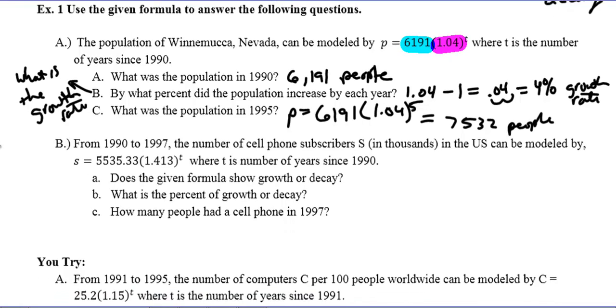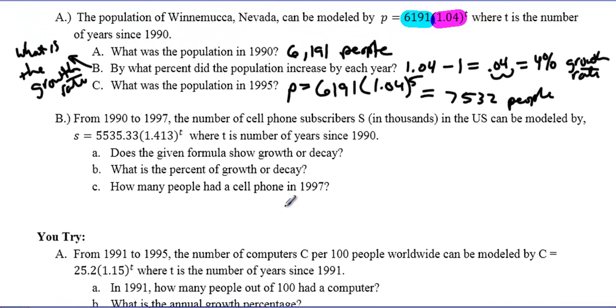Part B: from 1990 to 1997, the number of cell phone subscribers S (in thousands) in the U.S. is modeled by S = 5535.33(1.413)^t where t is the number of years since 1990. Notice it says in thousands, that's going to be important. The first question says, does the formula show growth or decay? Growth or decay is located right in this spot. If it's between 0 and 1, that's decay. If it's greater than 1, it's growth. Obviously 1.413 is bigger than 1, so we have growth.